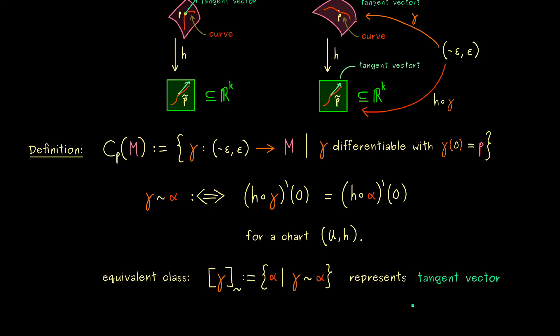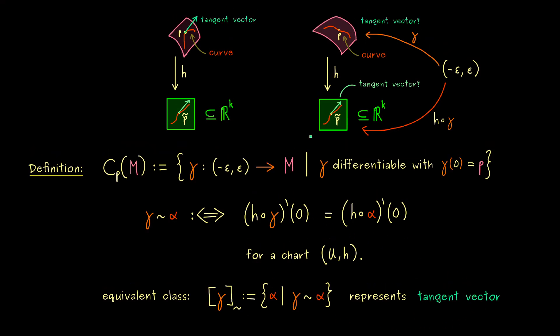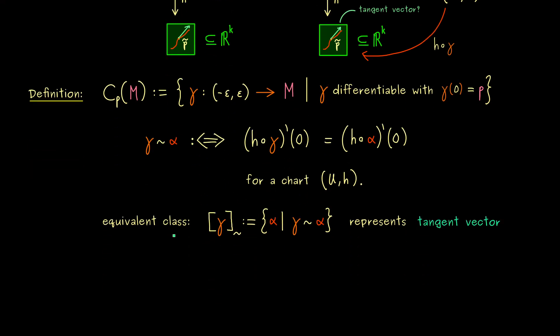So what you should see here is, that this representing of tangent vectors works perfectly for submanifolds. And the important thing for us is now, it can also be translated to the abstract case. And with that, we have finally found one possibility to deal with tangent vectors on an abstract manifold. Therefore, eventually, we can define the tangent space for a manifold.